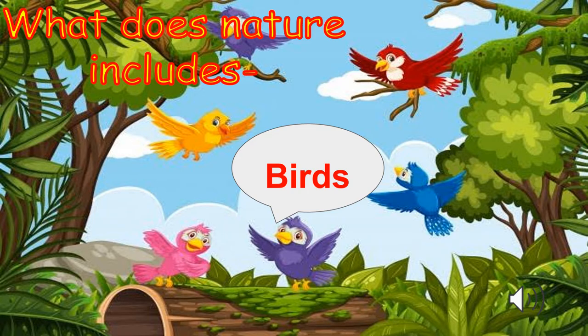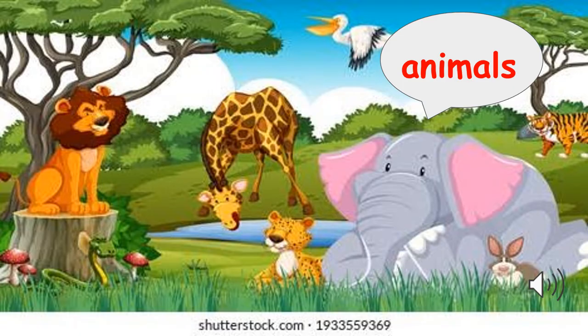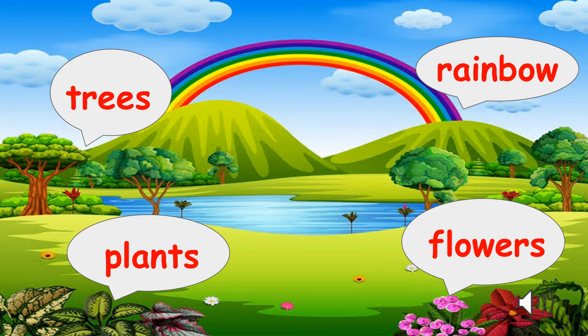Let's see what does nature include. These are birds and we all know birds are not made by us, so it is a natural thing. All the animals, insects, trees, plants, flowers and even rainbow — even rainbow is a natural thing.